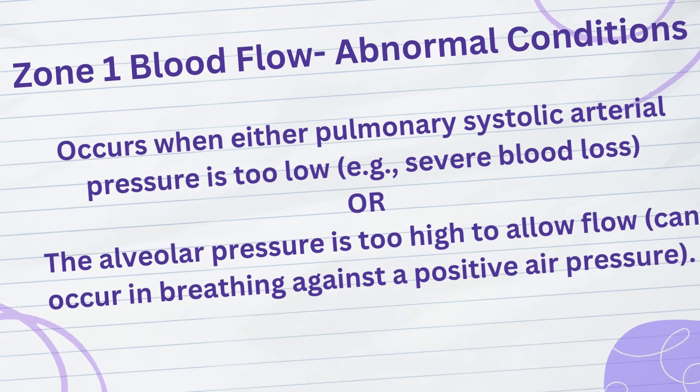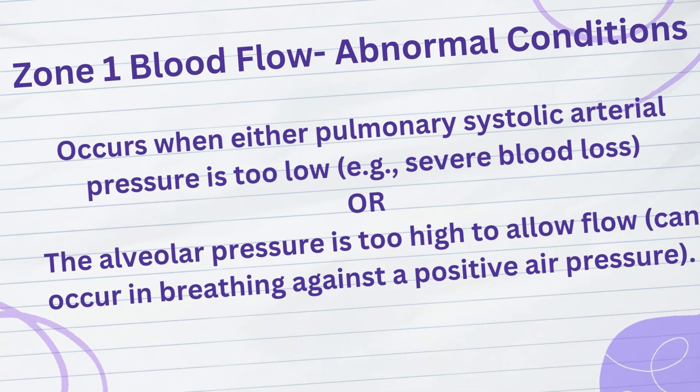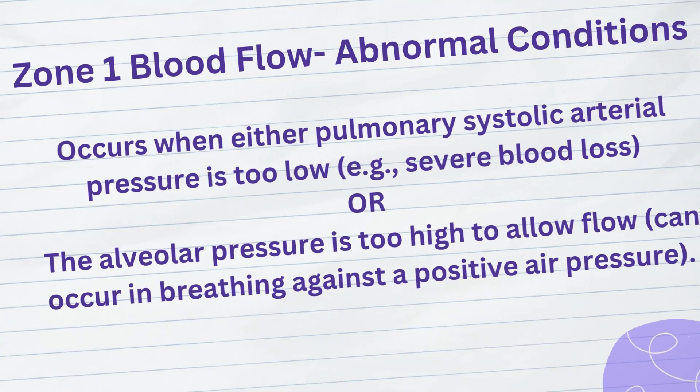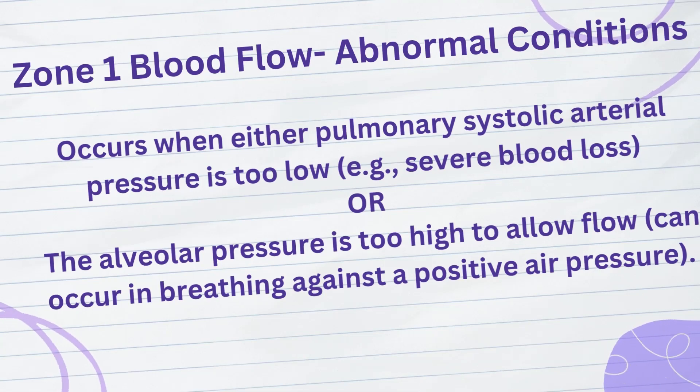Another instance in which zone 1 blood flow occurs is in an upright person whose pulmonary systolic arterial pressure is exceedingly low, as might occur after severe blood loss.